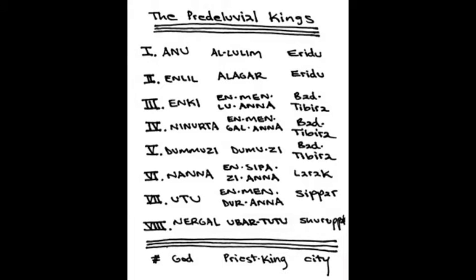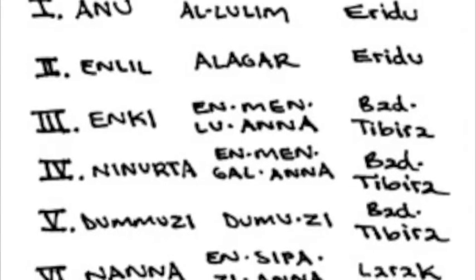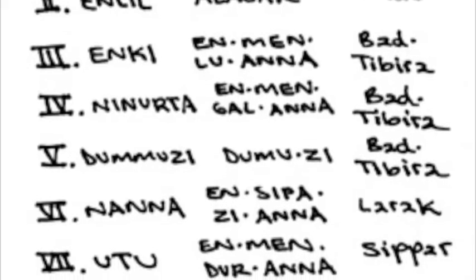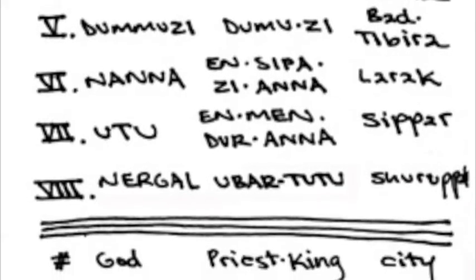Apocryphal records of history record the name of the king who was ruling in Shurupak, that city by the Euphrates, when the flood swept over. By the name Zayasudra in Southern Sumerian, or as Utnapishtim in Northern Akkadian.